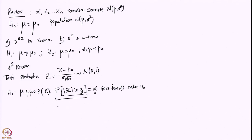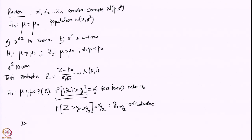We find that the probability of Z greater than z subscript (1 minus alpha/2) equals alpha/2, and therefore z subscript (1 minus alpha/2) is the critical value. The decision rule is: reject H0 if the statistic |Z| is greater than z subscript (1 minus alpha/2).